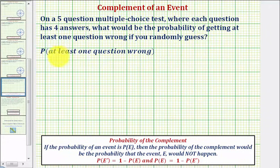To find the probability of at least one question wrong, we have to find all the ways of getting one question wrong, two questions wrong, three questions wrong, four questions wrong, and five questions wrong. And that would be challenging, so to make this easier we'll use the idea of the complement of an event.